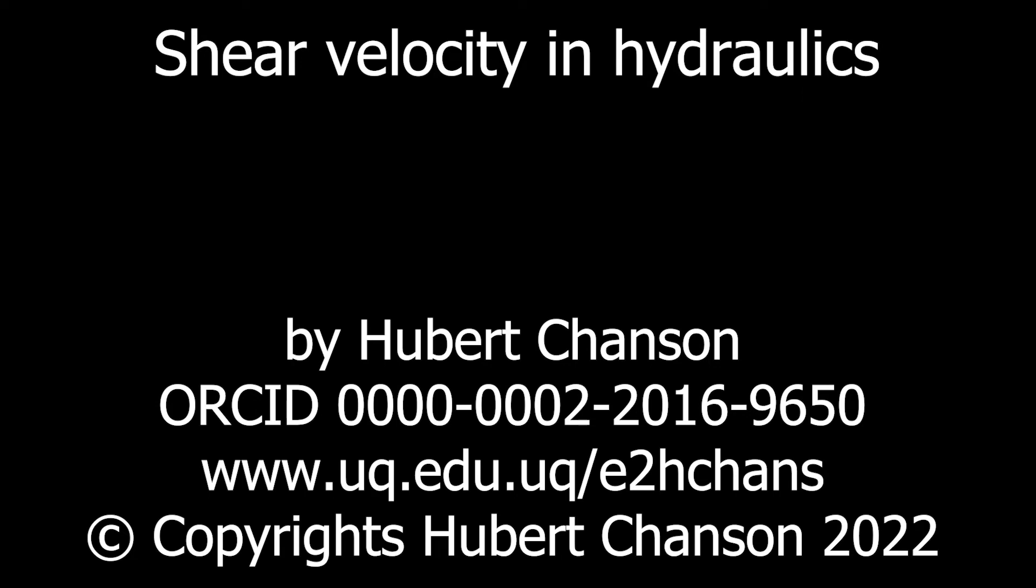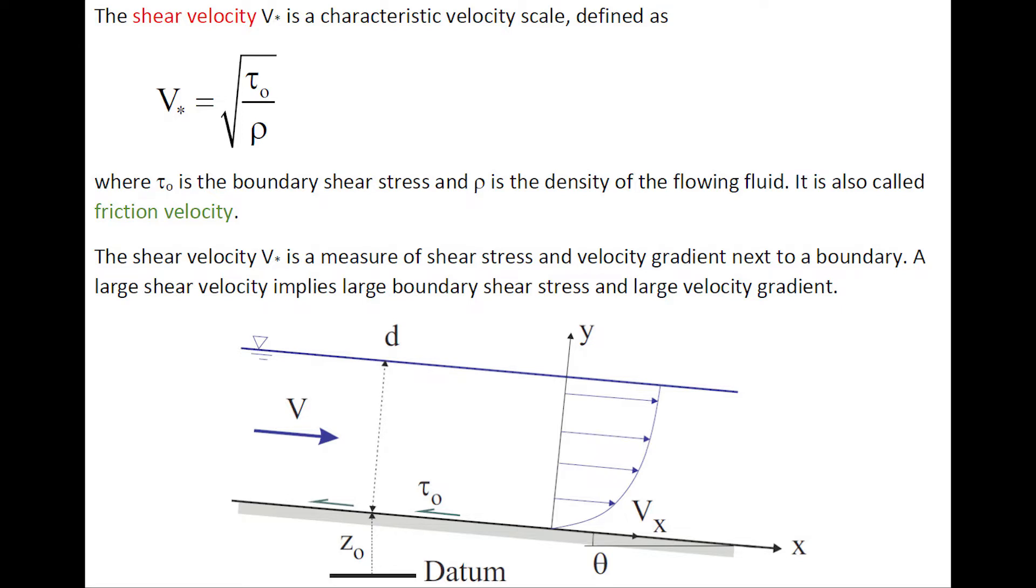The shear velocity is a characteristic velocity scale defined as the square root of the boundary shear stress divided by the density of the fluid field. It's also called the friction velocity.